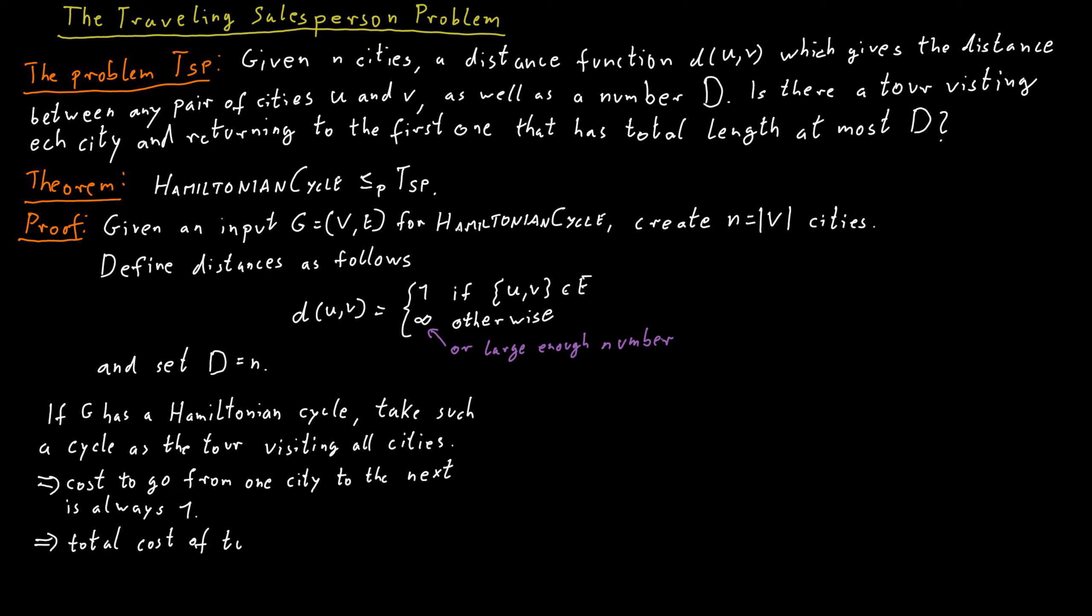And therefore, the total cost of this tour is n, because we have to go through n cities, so we will go through n edges, and each edge will cost us 1, essentially. So to go from one city to the next has a cost of 1, we do this n times, so that's a cost of n in total.